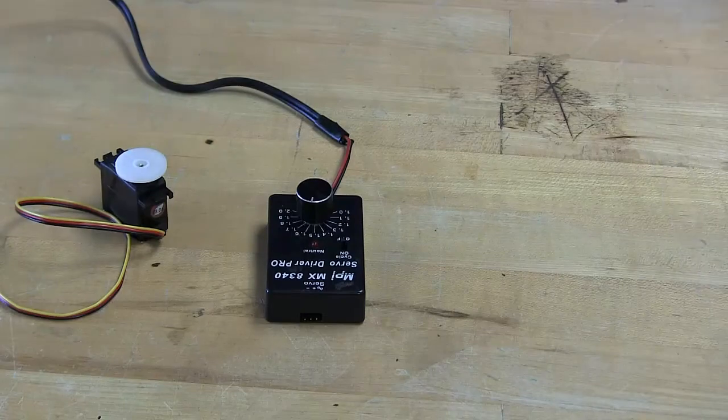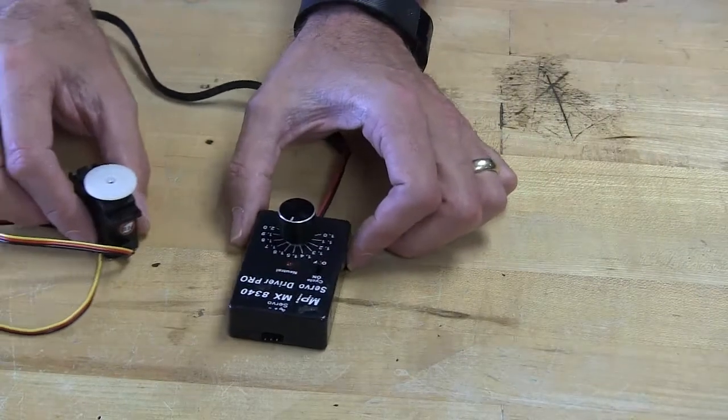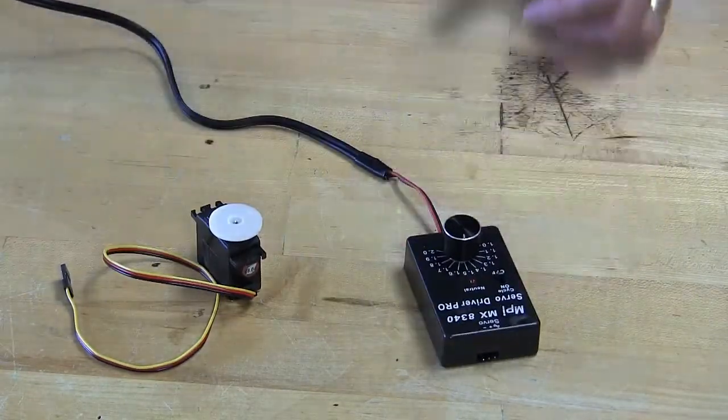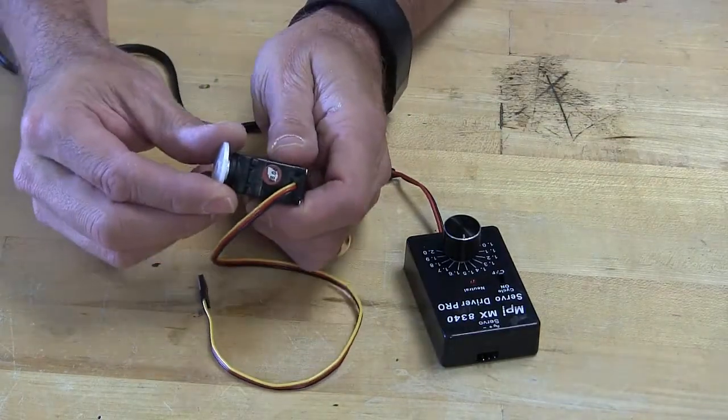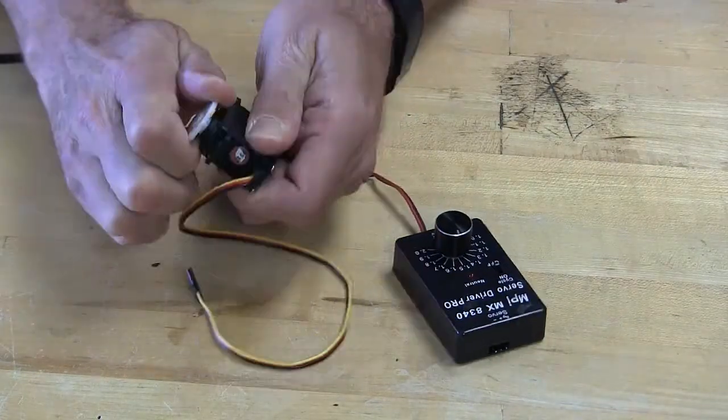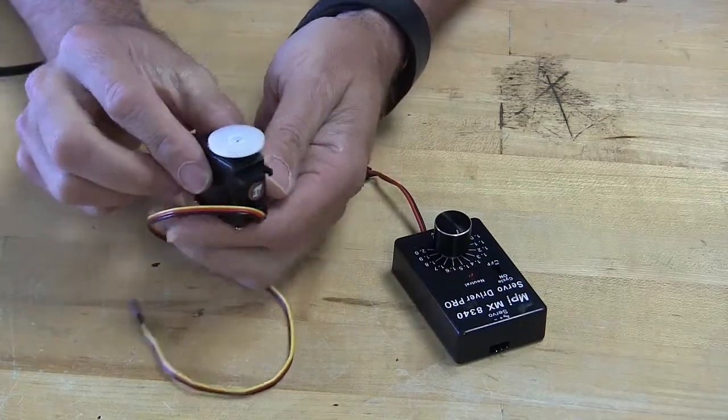One of the questions I get all the time is, how do you center your servos? Right out of the box, the first thing kids do is twist the servos to hear that noise. Then the question is, where's center?